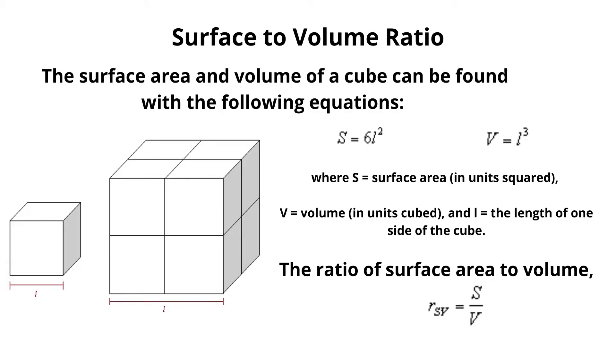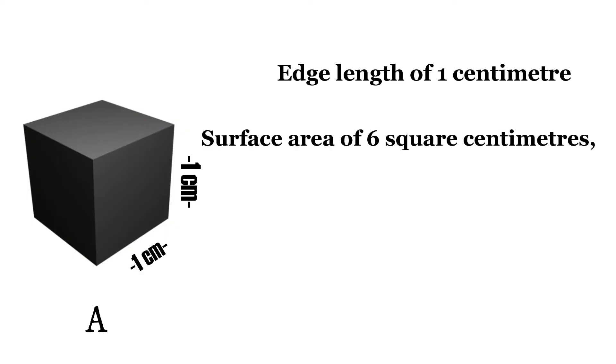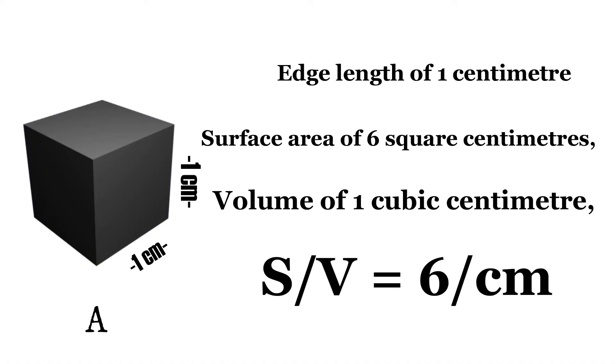Naturally, the higher this ratio, the higher is the amount of the material that can interact with its environment. As an example, let us consider small cubes having an edge length of one centimeter, which gives them a surface area of six square centimeters and a volume of one cubic centimeter, giving object A an SV ratio of six per centimeter.